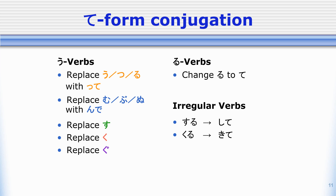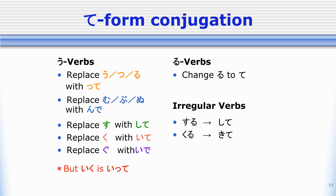For verbs that end in su, like hanasu, we get rid of the su and change it to shite. So hanasu becomes hanashite. For verbs that end in ku, like kaku, we get rid of the ku and change to ite — so kaku becomes kaite. For verbs that end in gu, like oyogu, we get rid of the gu and change to ide — so oyogu becomes oyoide. We have one special exception: iku changes to itte in the te-form.